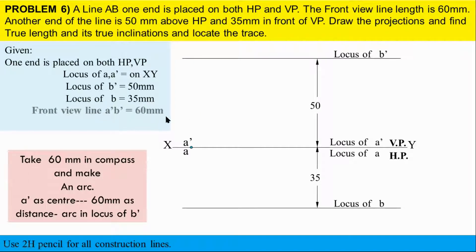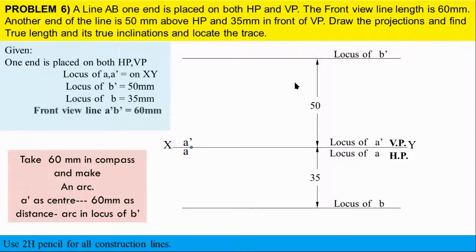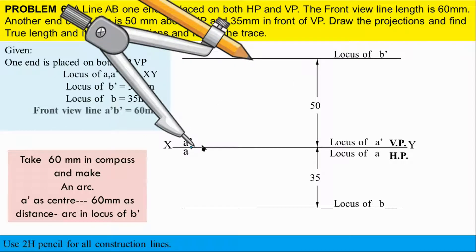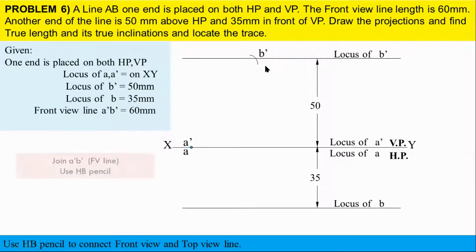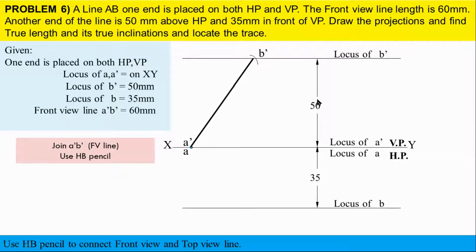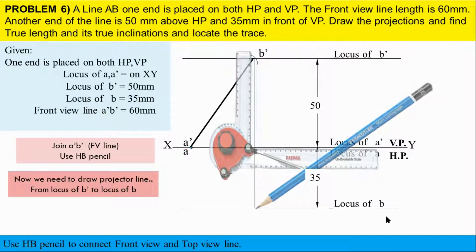Right — compass here. Front view: from XY, point with compass, mark the distance. The front view line B-dash is marked. Mark A-dash B-dash. Drop a projector line — vertical — down from B-dash. Now find the locus of B.